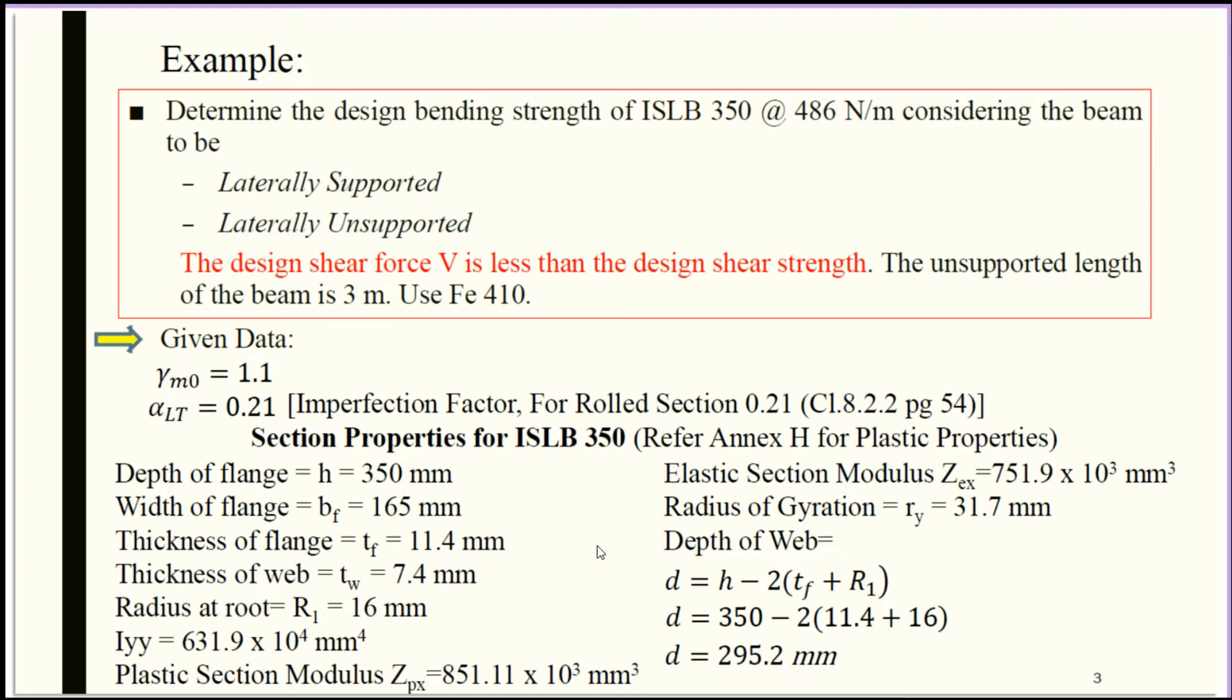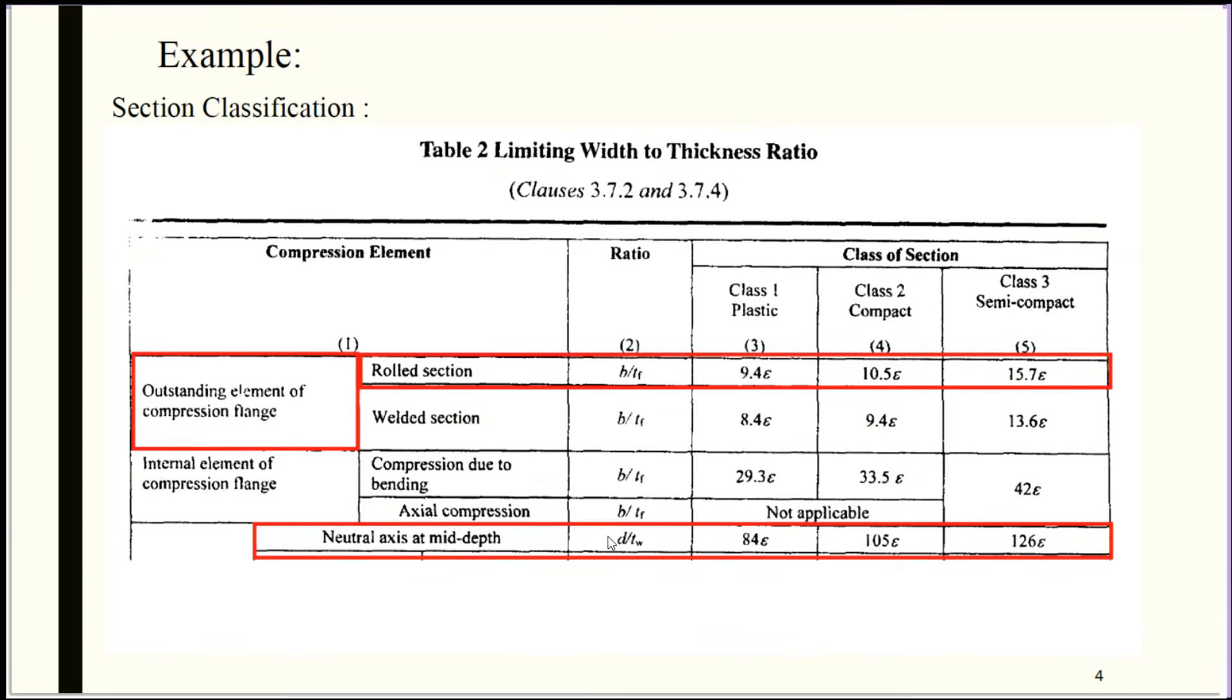Our next step is to classify the section: is the section plastic, compact, or semi-compact? In IS 800-2007, Table 2 limiting width to thickness ratio (Clause 3.7.2 and 3.7.4) mentions for the outstanding element of the compression flange for rolled section.